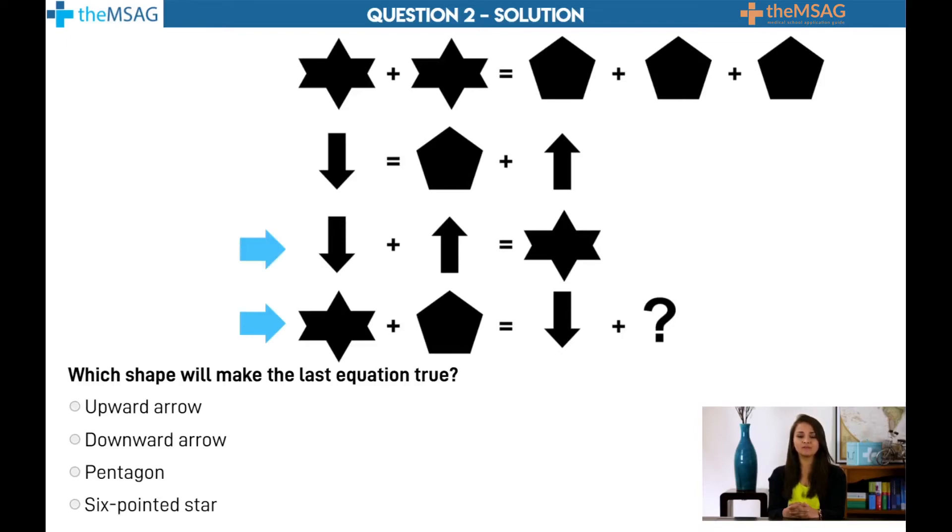Aside from simply substituting repeatedly and seeing what happens. The third equation tells us that the star equals downward arrow plus upward arrow.